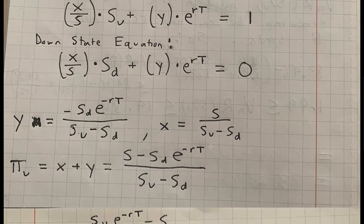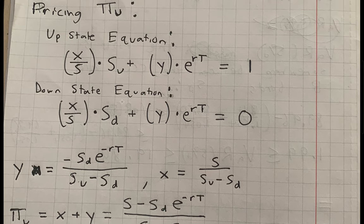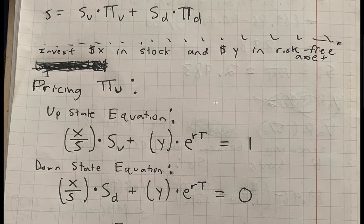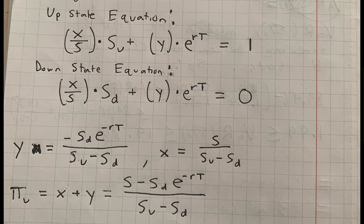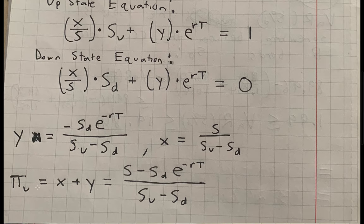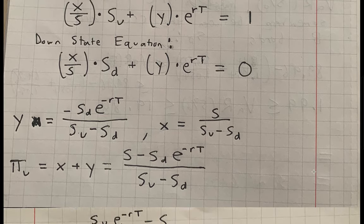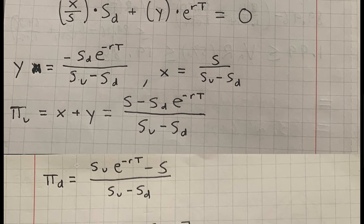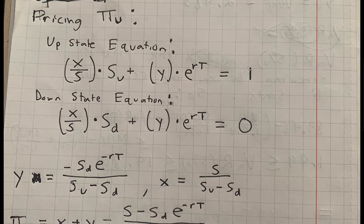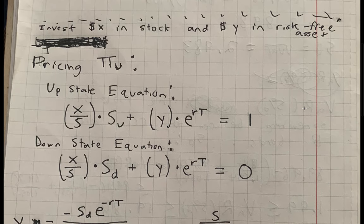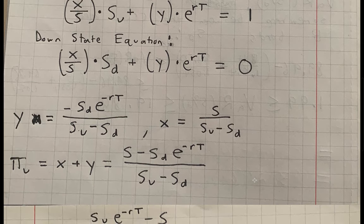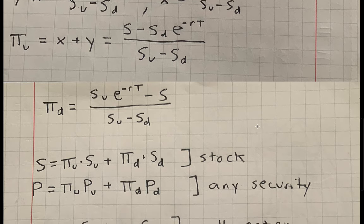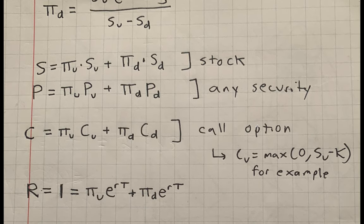Since x and y represent dollars invested, adding them gives the total cost of replicating π_u, which is the price of the up state arrow security. Solving the equations yields the formula for π_u. We do the same thing for the down state arrow security π_d, except the payoffs are zero in the up state and one in the down state, giving us a corresponding formula for π_d.